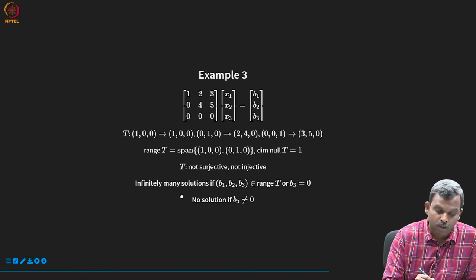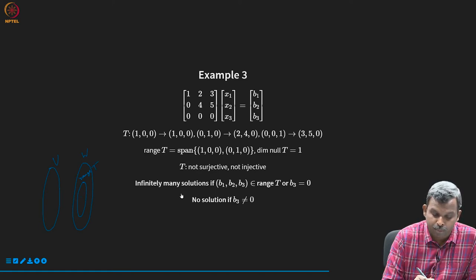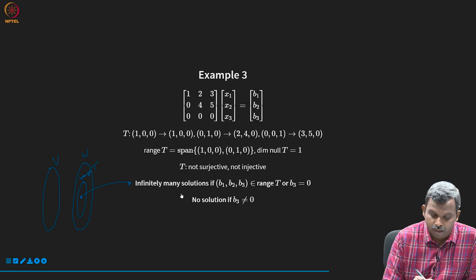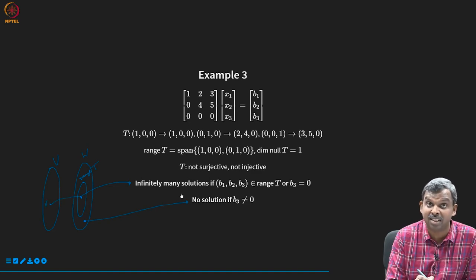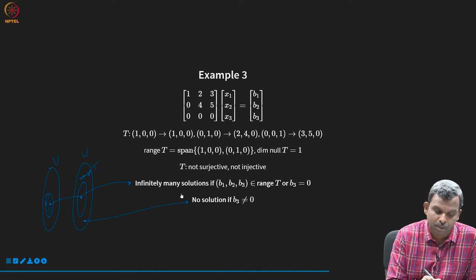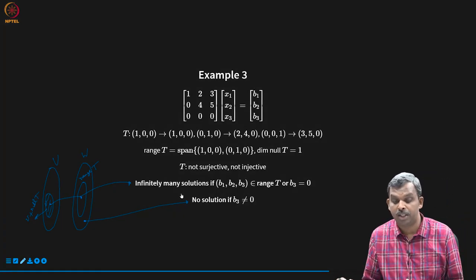Let us draw a picture. If you have V and W, and this is your range of T — if your b is in the range, you will have infinitely many solutions. There is at least one V because b is in the range, and then you do V plus null T to get infinitely many solutions. The properties of the linear map start affecting the nature of the solution: as long as the map was surjective, for any b there is a solution; once it becomes not surjective, you have to worry about whether a solution will be there, depending on whether b is in the range. Whether it is injective or not controls how many solutions you have — if injective, only one solution; if not injective, infinitely many.